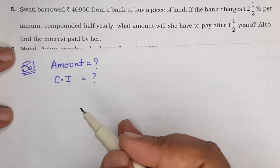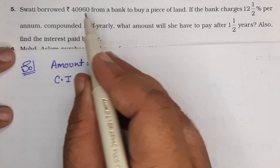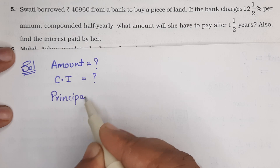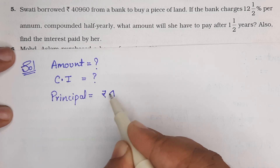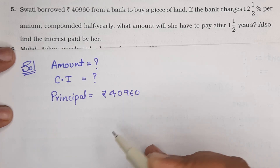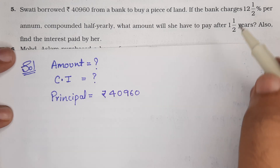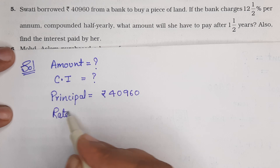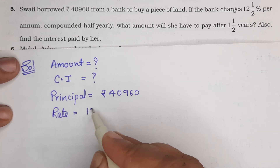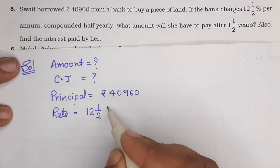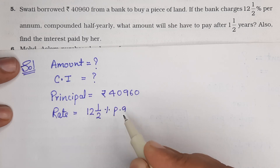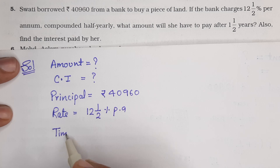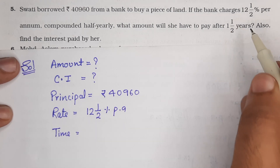Given क्या क्या information है? यह principle है — principle equals to Rs 40,960। यह rate है — rate कितना दे रखा है? 12 whole 1 upon 2 % per annum। और यह time दे रखा है — time कितना दे रखा है? 1 whole 1 upon 2 years।